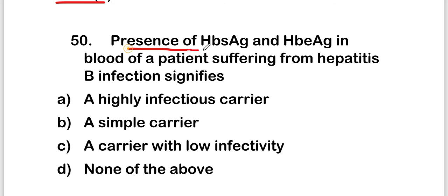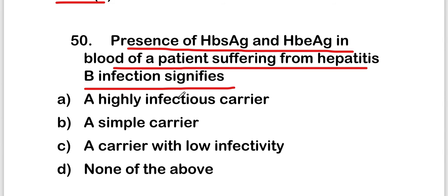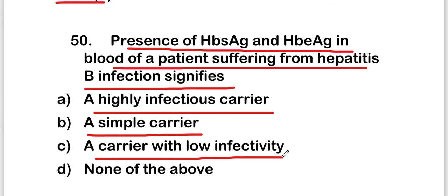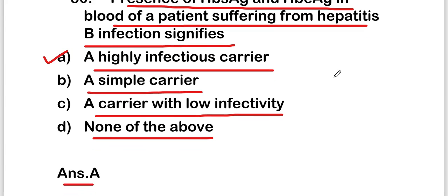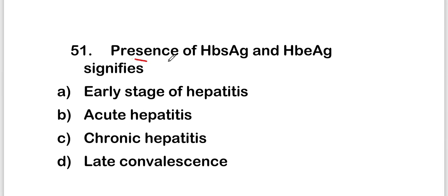The next question is: presence of HBsAg and HBeAg in the blood of a patient suffering from hepatitis B infection signifies a high infectious carrier, a simple carrier, a carrier with low infectivity, or none of the above? The right answer is option A, that is a high infectious carrier.